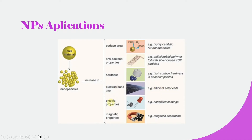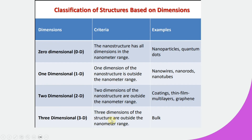They also have improved electric and magnetic properties. Now moving on towards the classification of nanostructures based on dimensions. The 0D nanoparticles are those that have all their dimensions in the nanometer range. What are these dimensions?